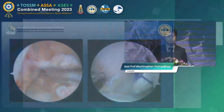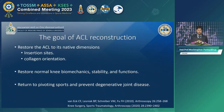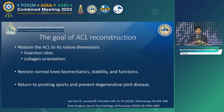In most of my cases, I prefer to do the double bundle reconstruction because my goal of ACL reconstruction is to restore the ACL to its native dimensions, including the insertion site and orientation of the fiber. The objective is to restore normal knee biomechanics, stability and function, so my patient can return to their previous sport and prevent degenerative joint disease.